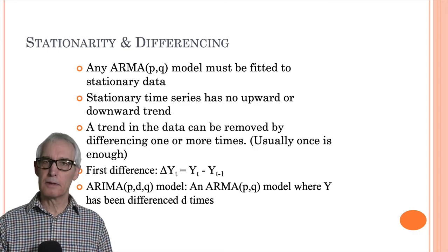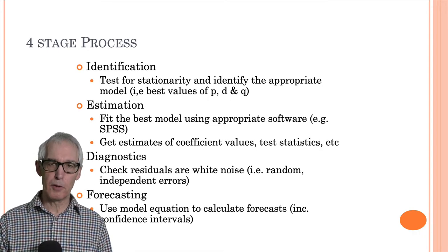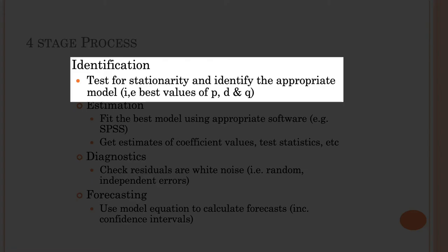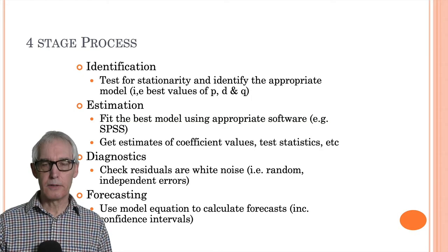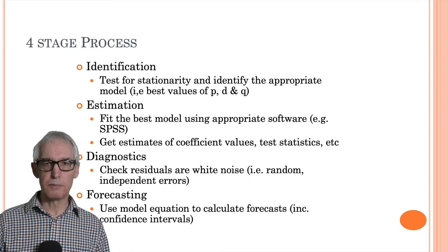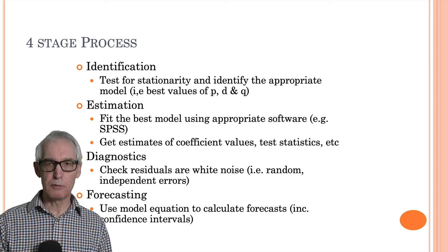The actual process of ARIMA modeling involves four stages. Firstly, identification: you test for stationarity, check that the data is stationary, and if not, take the difference and so on until you have a stationary data series. You then have to decide upon the values of P and Q. There's no hard and fast rule for this — you have to use certain judgments, but there are principles which you can apply to determine this, which we'll look at.